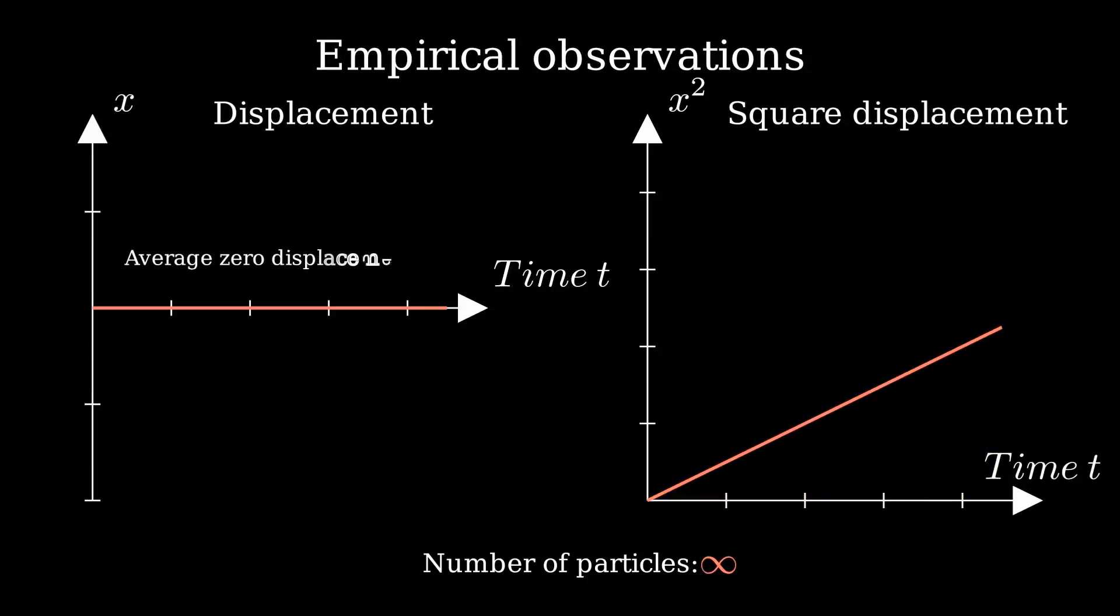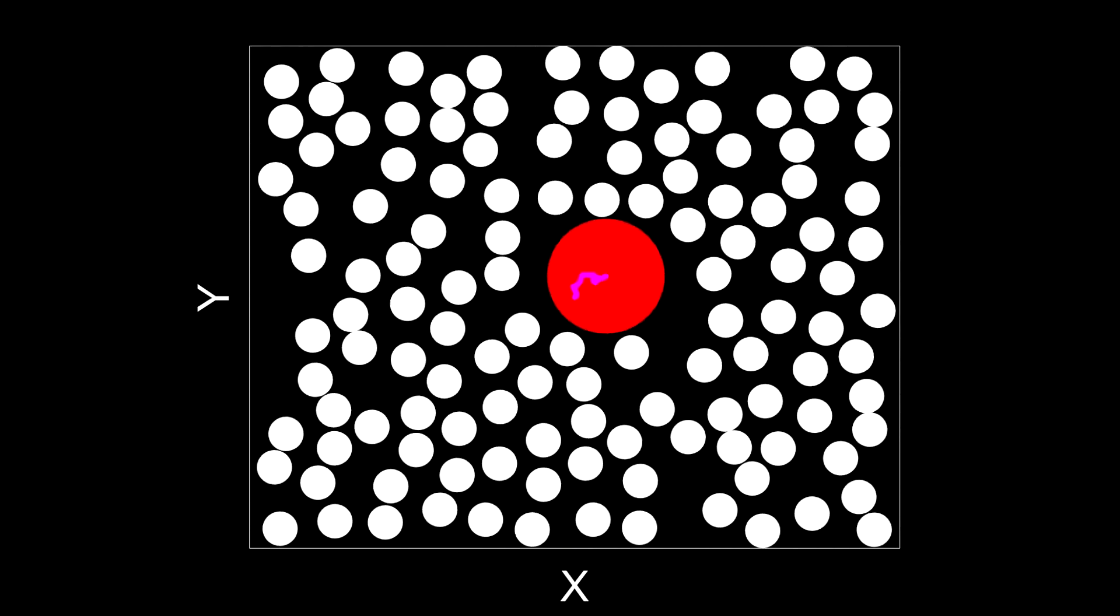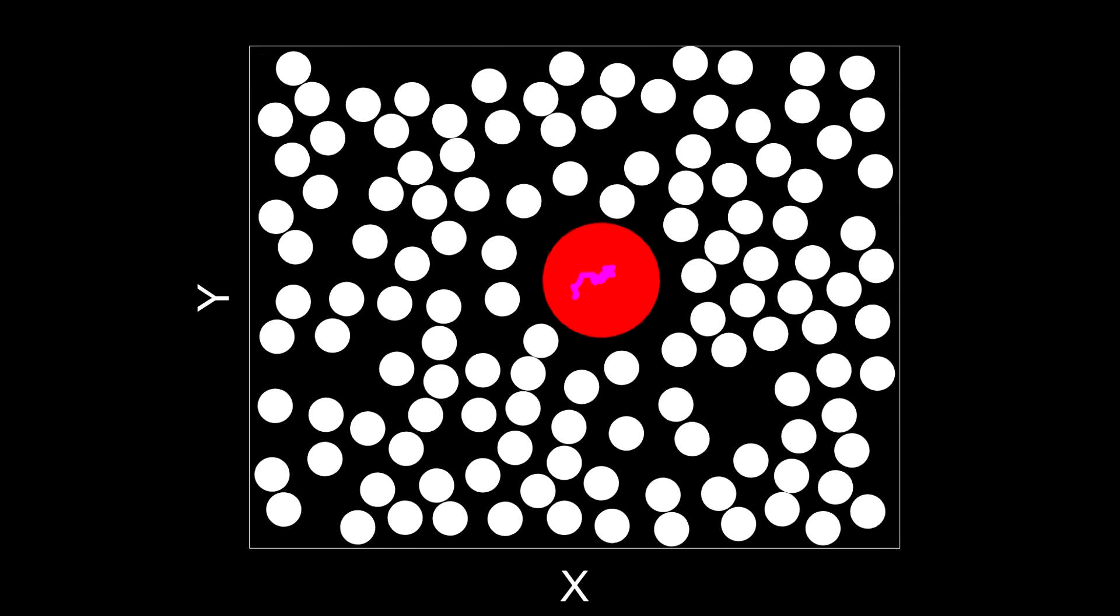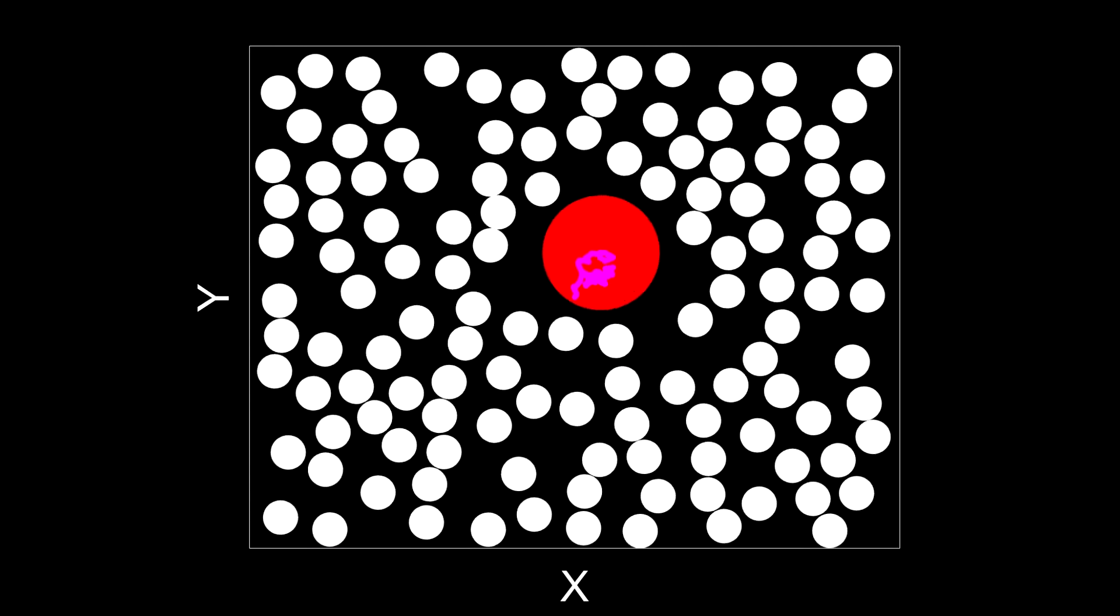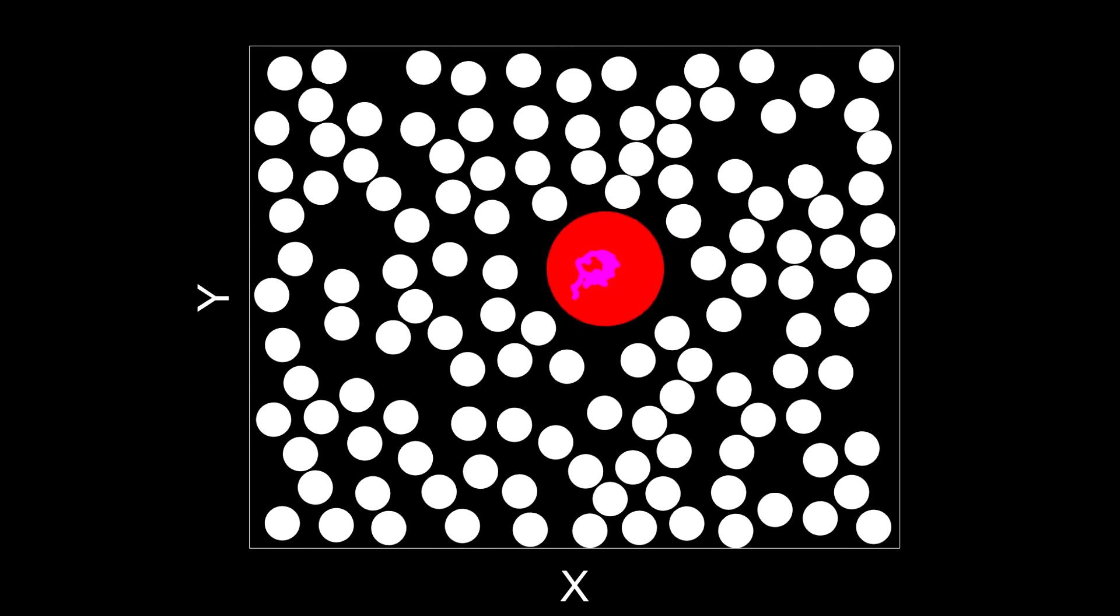Fascinating, isn't it? Now, let us see how these observations emerge from Einstein's mathematical derivation. Now that we have visualized what Brownian motion looks like with a real-life experiment, we can model it mathematically, just like Einstein did back in 1905.